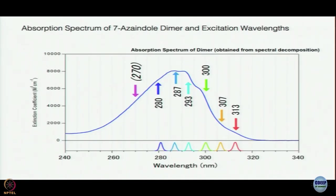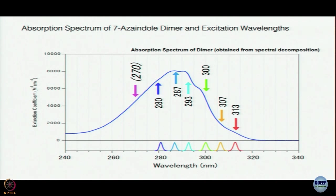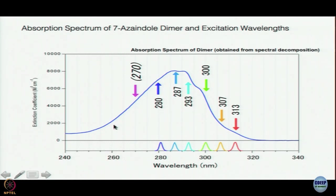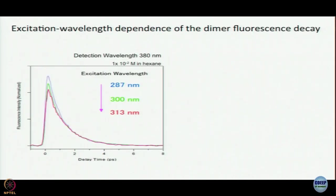What they did is excite at different wavelengths across the absorption band: 270, 280, 287, 293, 300, 307, and 313 nanometers. The problem is you are exciting with an ultrafast pulse — it is not monochromatic — so you must do many experiments carefully. You cannot go to 260 nanometer because there is hardly any absorption there. This was a difficult experiment, and the data analysis was also not easy.